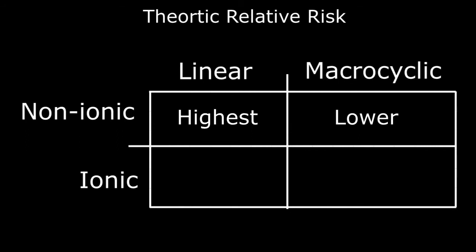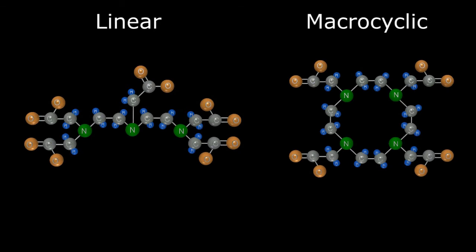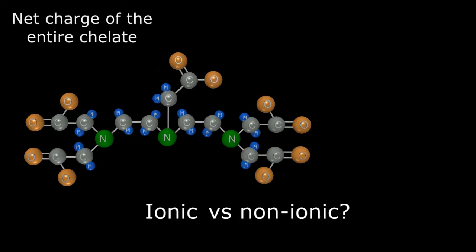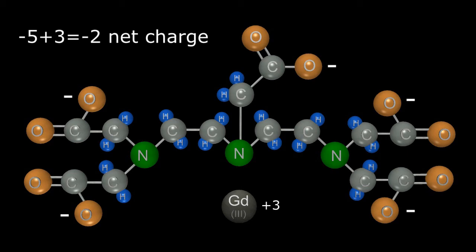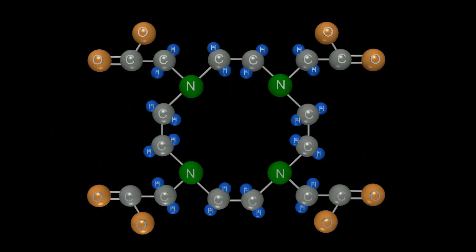We just described the linear and macrocyclic configurations of the chelate but what about ionic versus non-ionic? Basically it all depends on the net charge of the entire chelated molecule. For example, in our linear molecule there are five negatively charged carboxylate side arms while the gadolinium cation has a positive charge of three. Therefore, our chelated molecule has a net charge of minus two and would be considered linear ionic. In the macrocyclic example, four negatively charged carboxylate side arms bind to the three positive charges of the gadolinium cation for a net charge of minus one. This would be macrocyclic ionic, the configuration with the lowest theoretic risk of NSF.